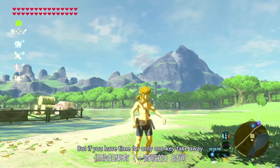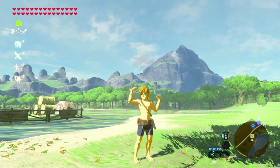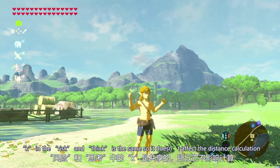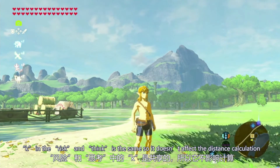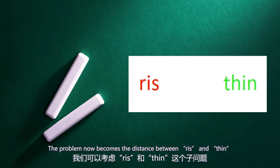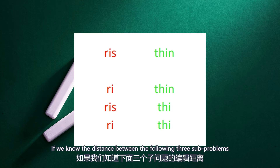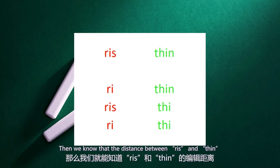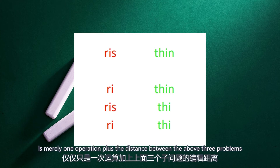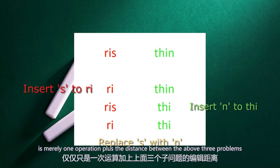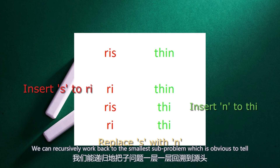But if you have time for only one key takeaway: K in Risk and Think is the same, so it doesn't affect the distance calculation. The problem now becomes the distance between Risk and Thin. If we know the distance between the following three sub-problems, then we know that the distance between Risk and Thin is merely one operation plus the minimum of those three sub-problems. We can recursively work back to the smallest sub-problem, which is obvious to tell.